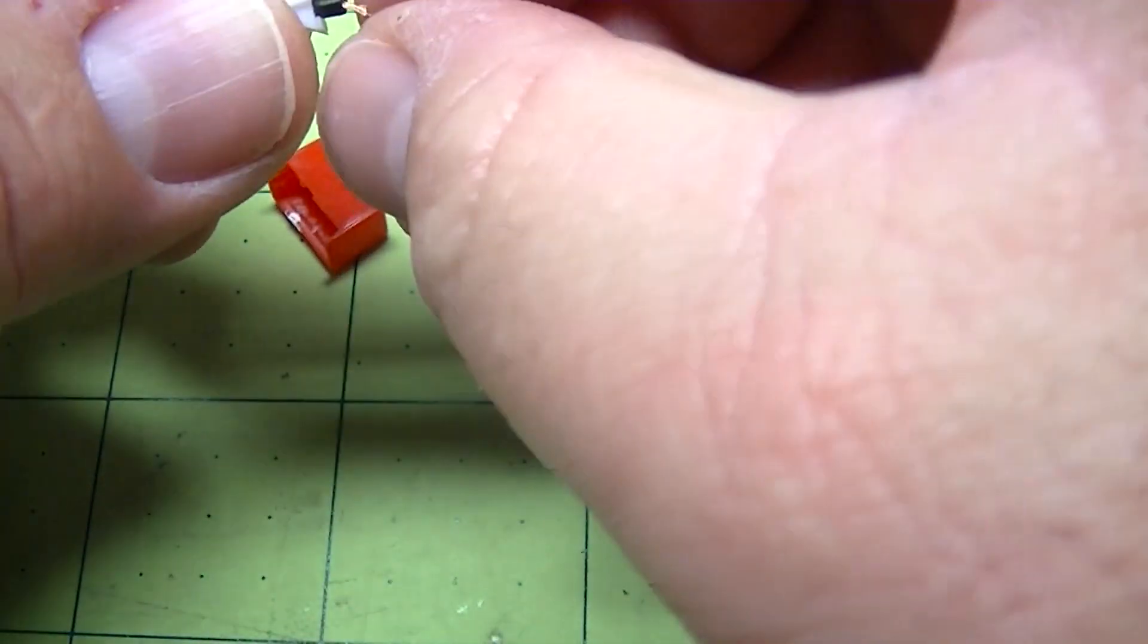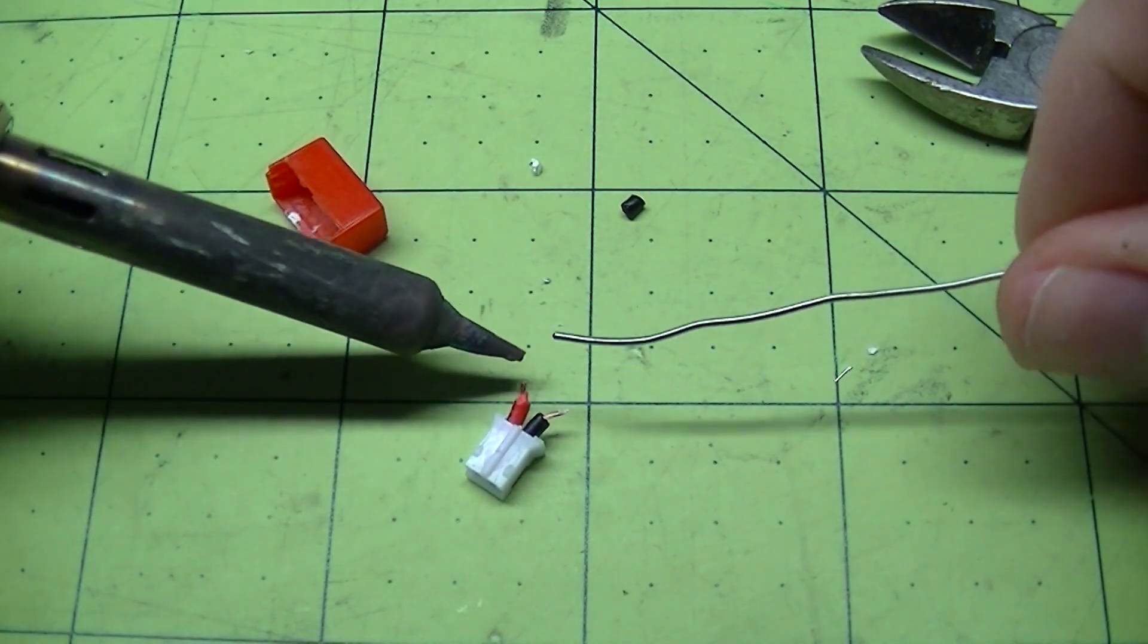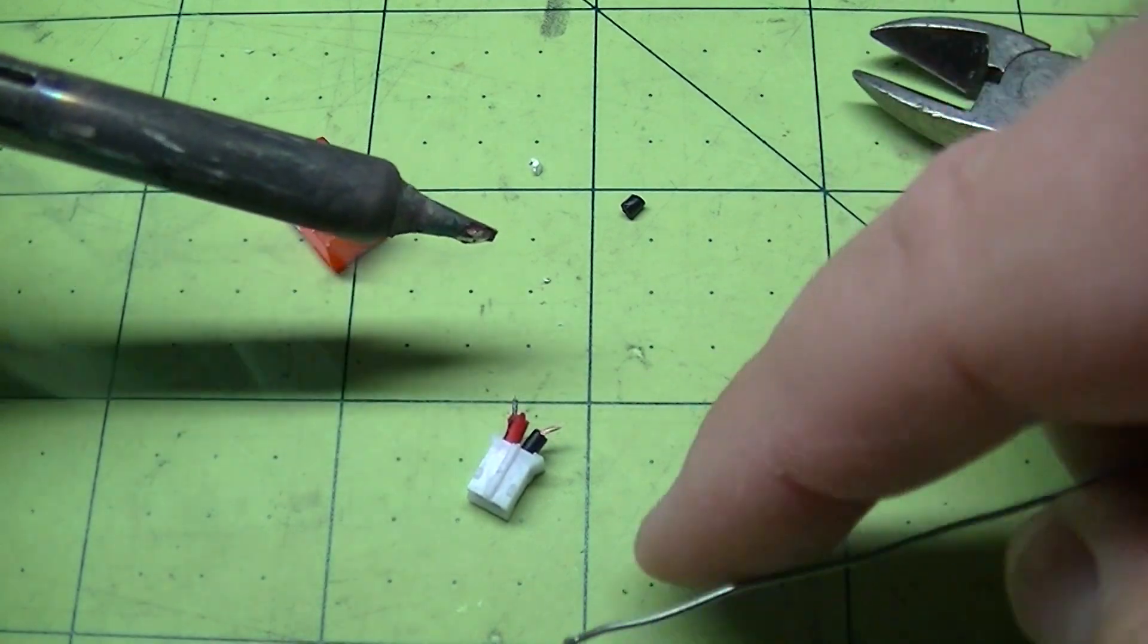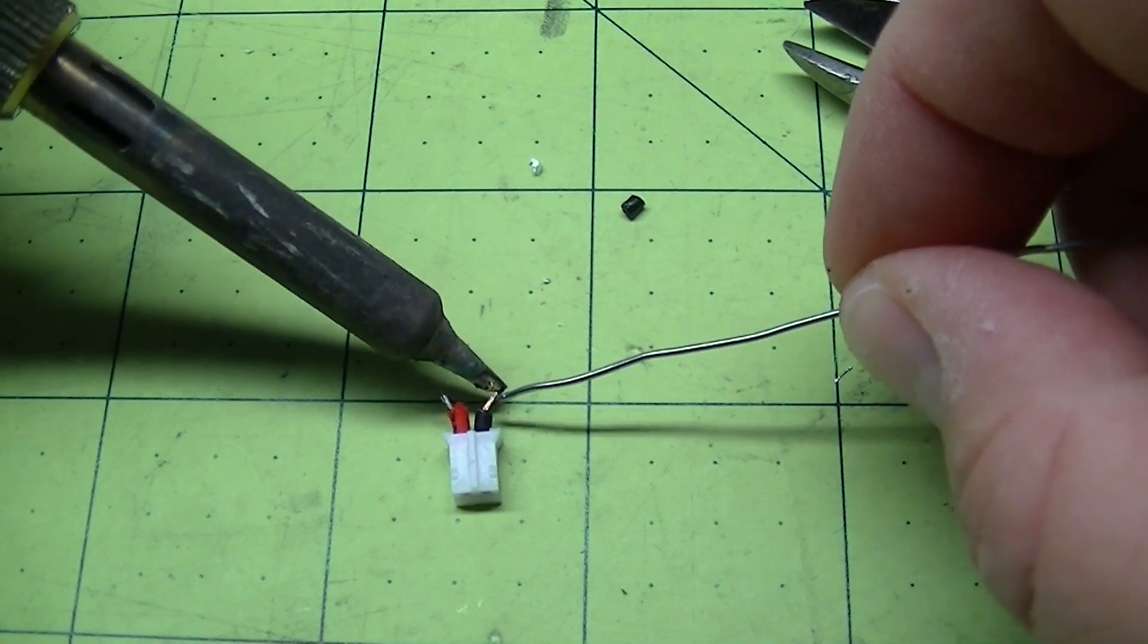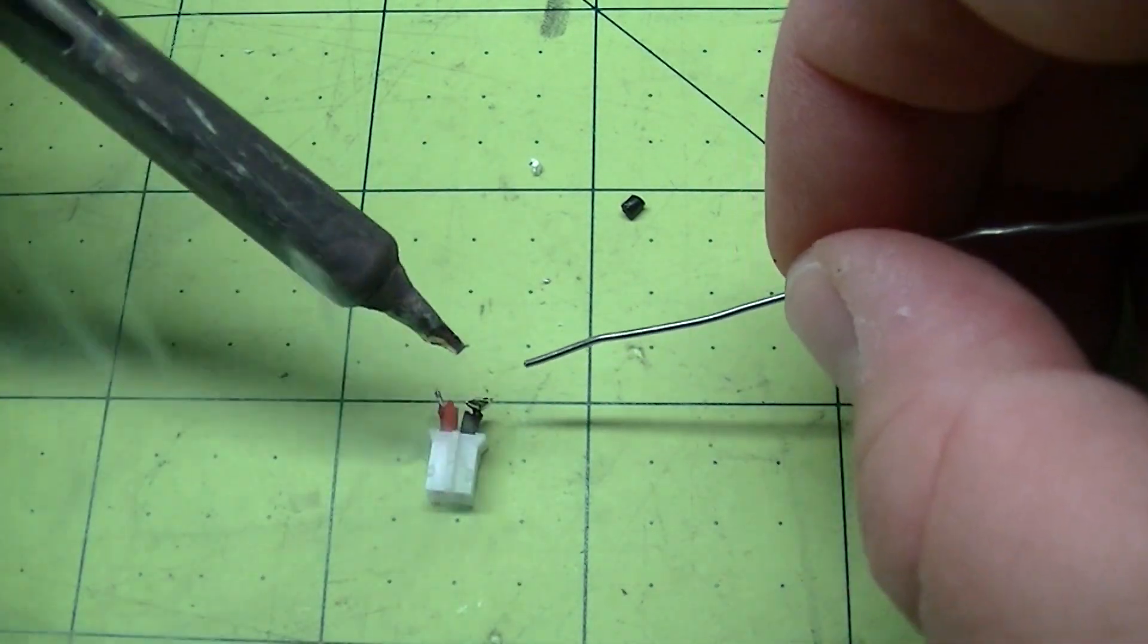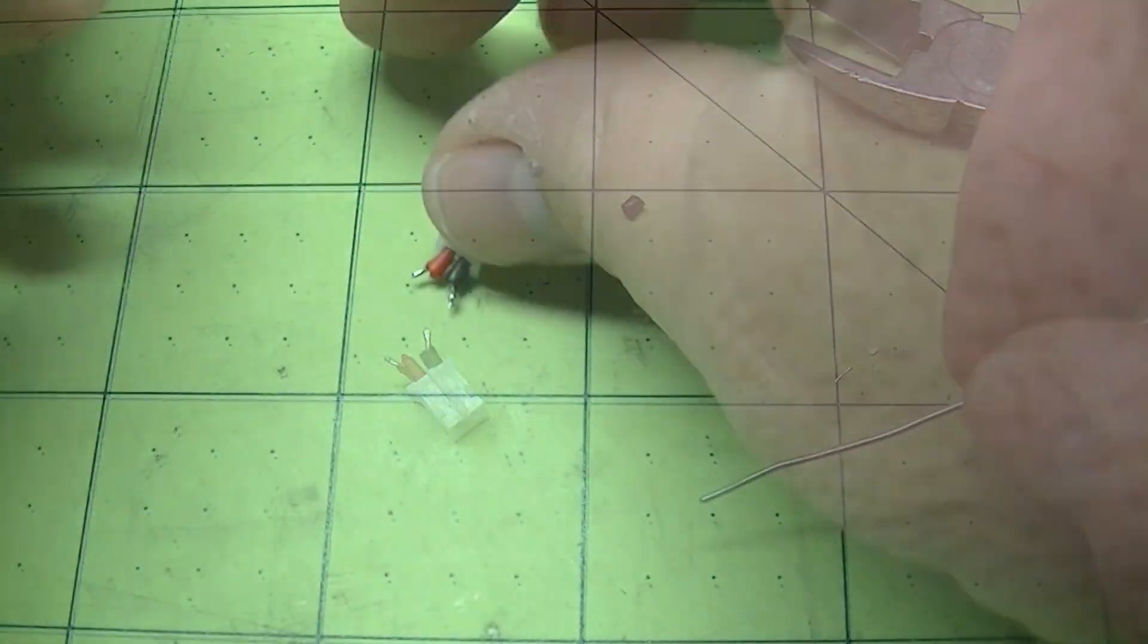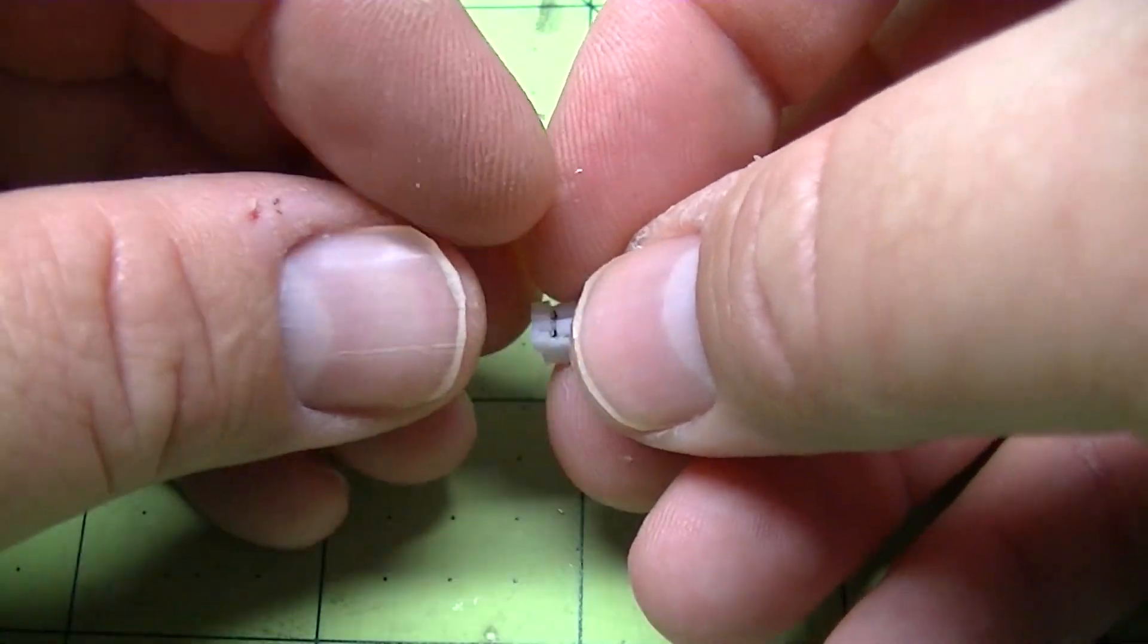At this point we need to put solder on our wire. Make sure we don't melt our cap.